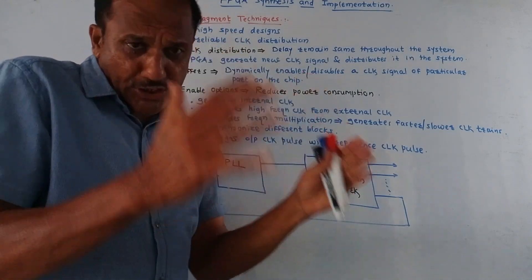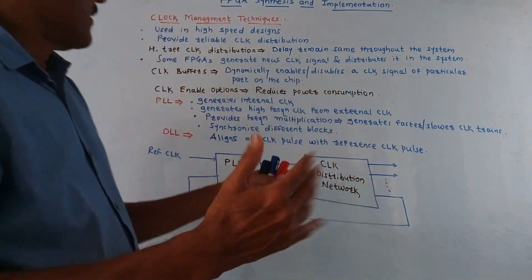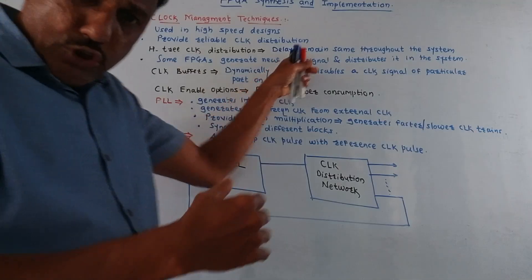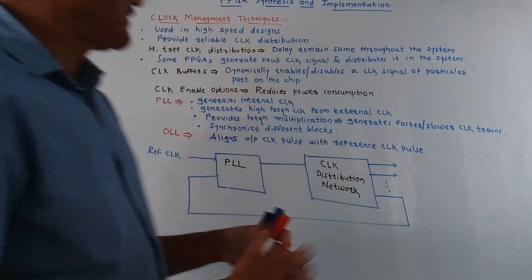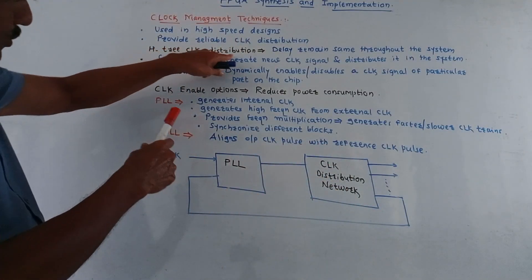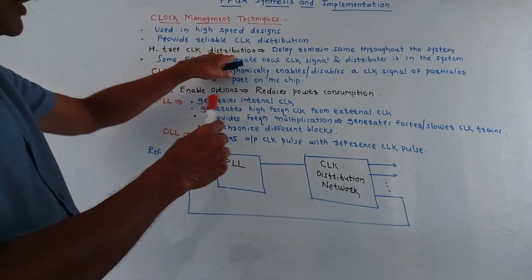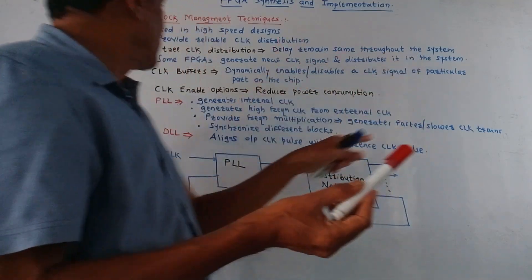This block H3 clock distribution technique is used to make the delay same for all the elements, all the parts of the circuit. So due to using this H3 clock distribution the delay remains same throughout the system.